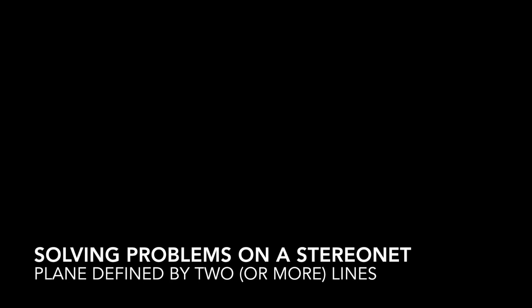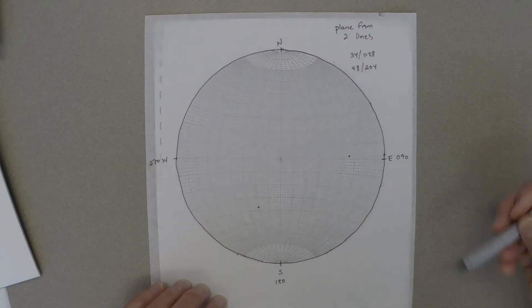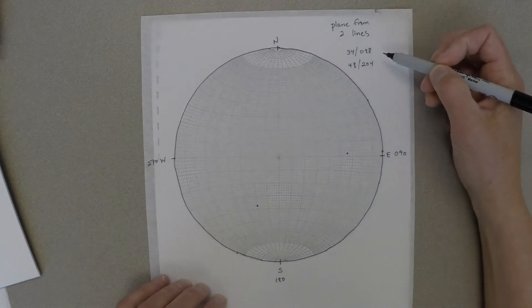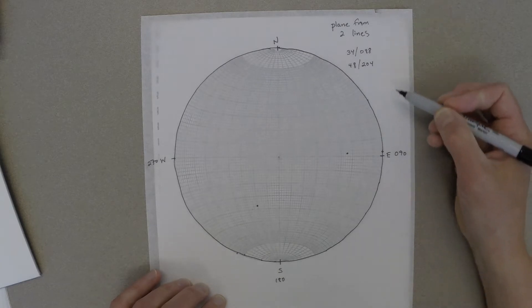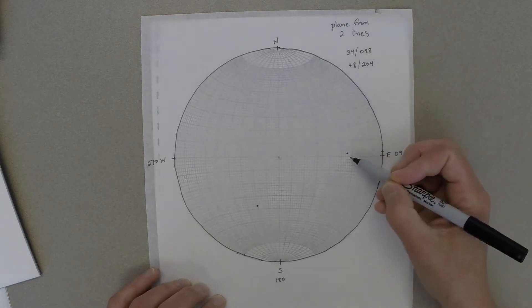Any two non-parallel lines define a unique plane, and we can use a stereonet to find the strike and dip of the plane that's defined by two, or in some cases, more lines. In this case, we have two lines that are already shown by dots on the stereonet, but let's check their orientations.